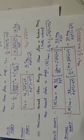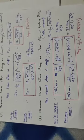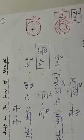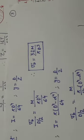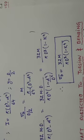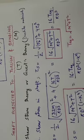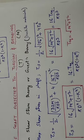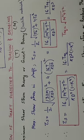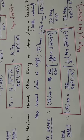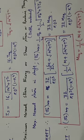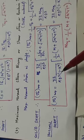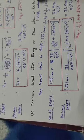In summary: for torsion only — solid shaft: 16T/πD³; hollow shaft: 16T/[πD³(1−K⁴)]. For bending only — solid shaft: 32M/πD³; hollow shaft: 32M/[πD³(1−K⁴)]. For combined torsion and bending using maximum shear stress theory: 16√(M²+T²)/πD³, or with (1−K⁴) for hollow. Using maximum normal stress theory: 32M_eq/πD³ where M_eq = (1/2)[M + √(M²+T²)], with (1−K⁴) for hollow shaft.